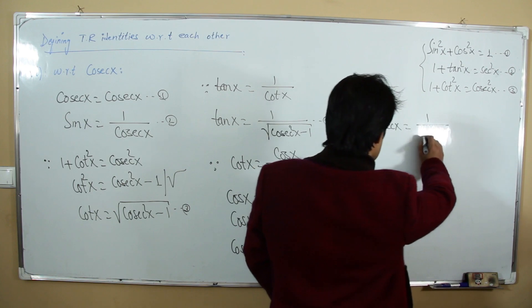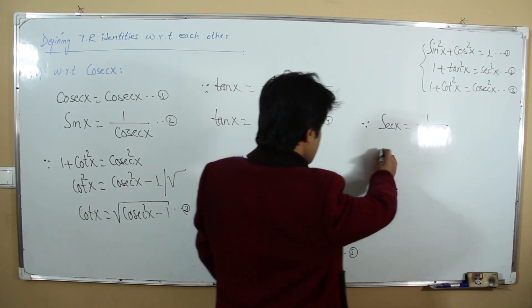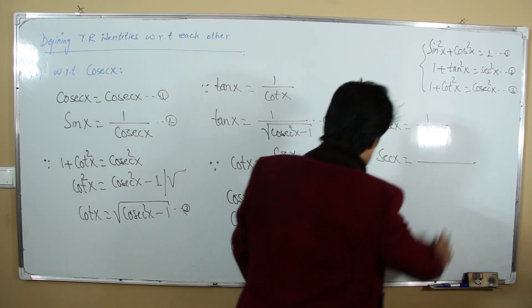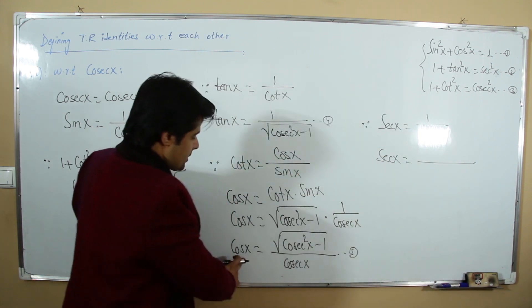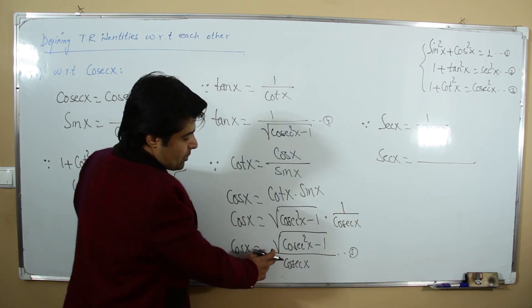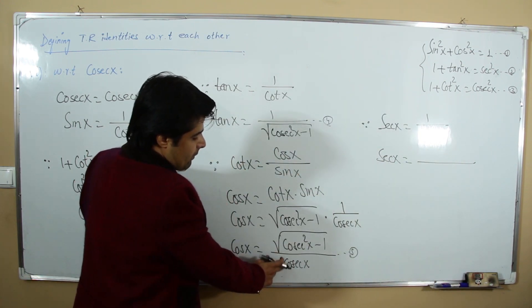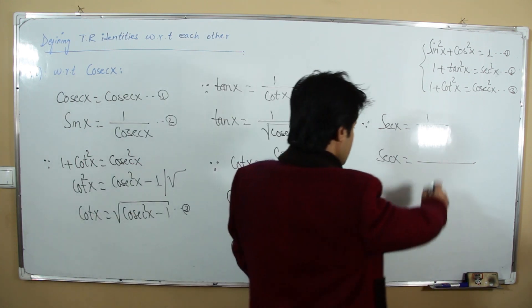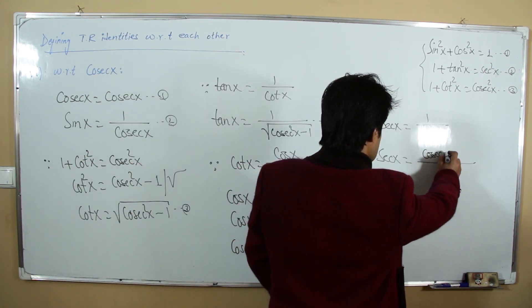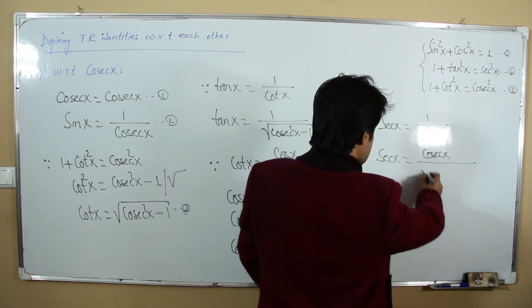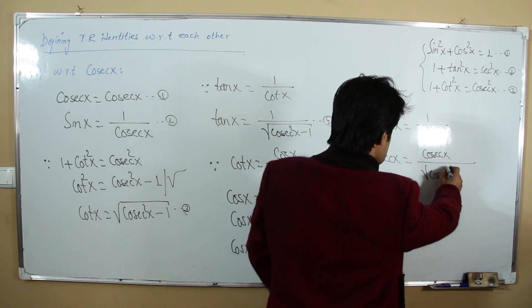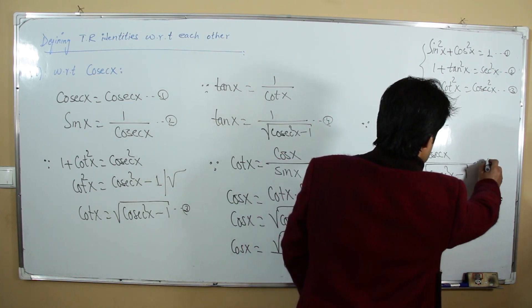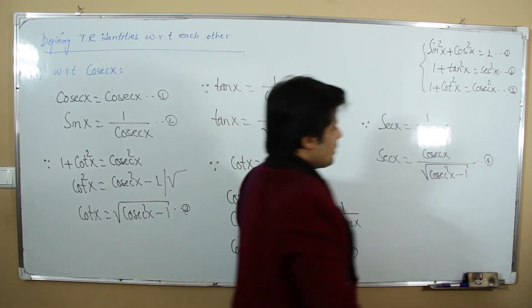Secant is the reciprocal of cosine: sec x = csc x / √(csc²x - 1). This is our sixth relation.